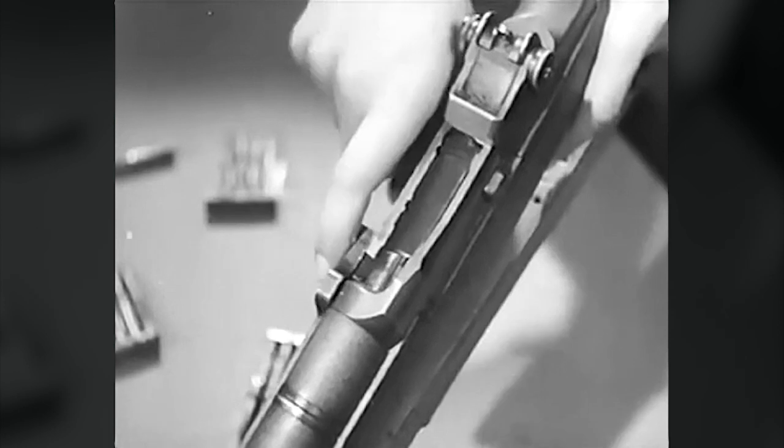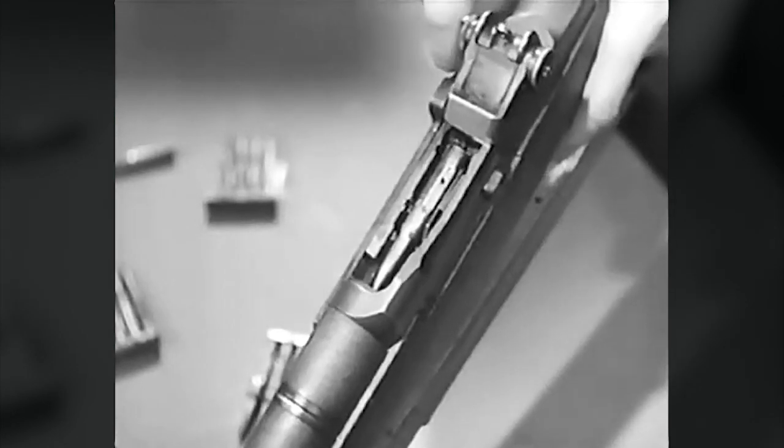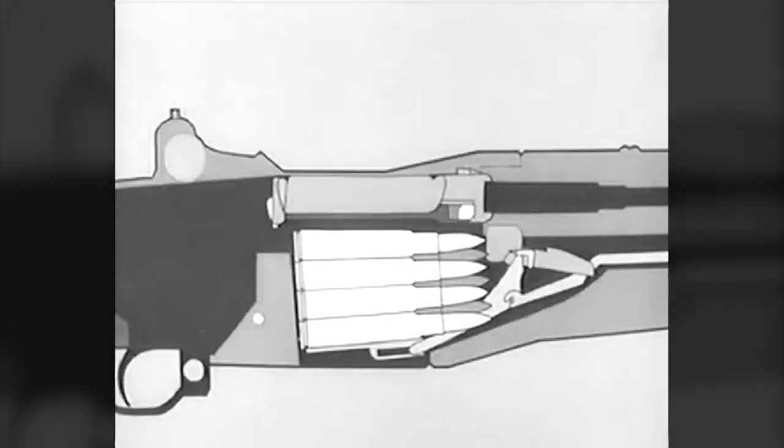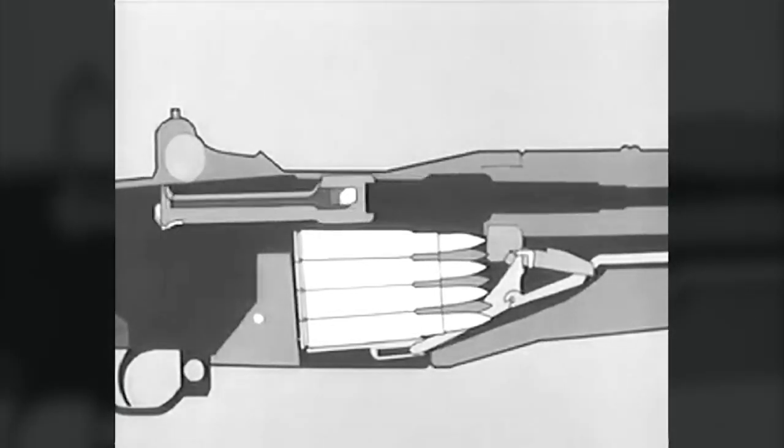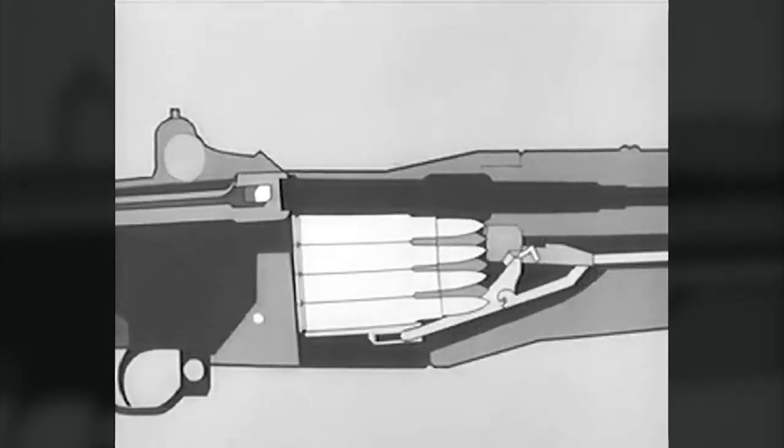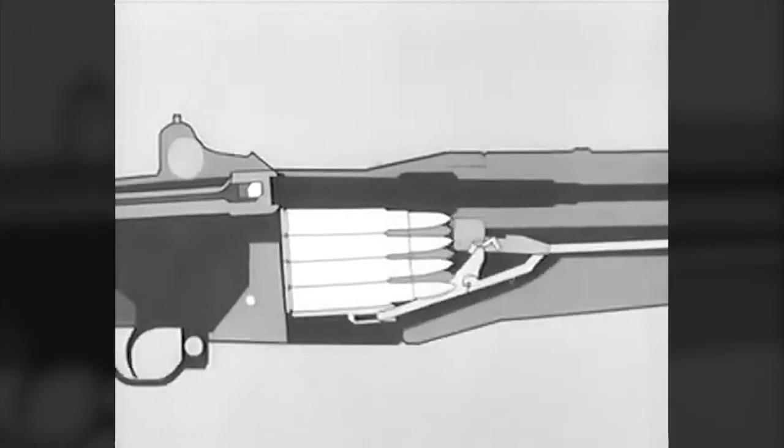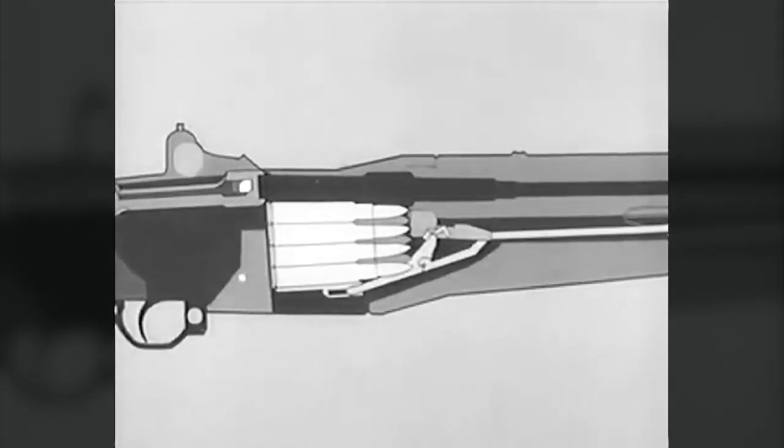Now as the bolt reached its rear position, the magazine was uncovered, allowing the empty case to be ejected. We use the diagram and take the bolt to the rear again. Notice the follower move up, pushed by the follower arm, rod and spring. It pushes the next cartridge up into feeding position.